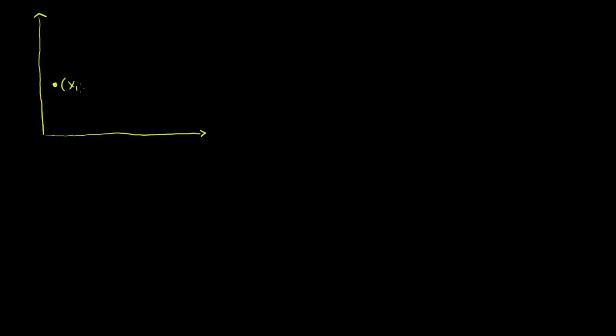In the last few videos, we saw that if we had n points, each of them have x and y coordinates. So let me draw n of those points. Let's call this point 1 — it has the coordinates x1, y1. You have the second point over here that has the coordinates x2, y2. And then we keep putting points up here, and eventually we get to the nth point that has the coordinates xn, yn.